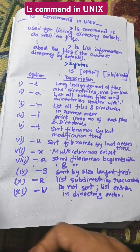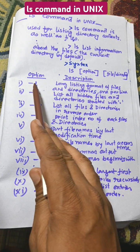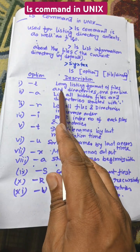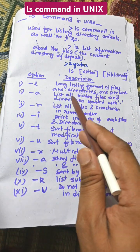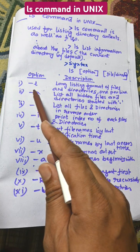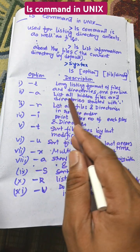What are the options we need to remember? ls hyphen l means long listing format of files and directories, one per line. ls hyphen a means list all hidden files and directories started with dot.